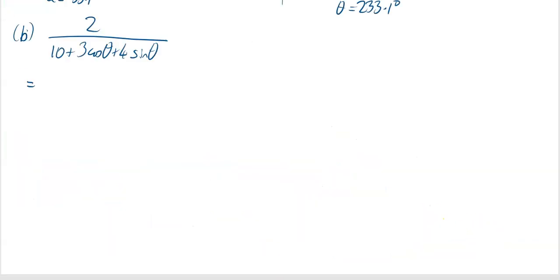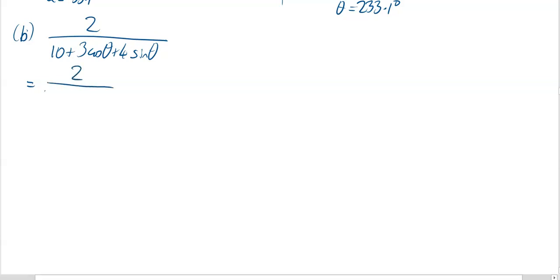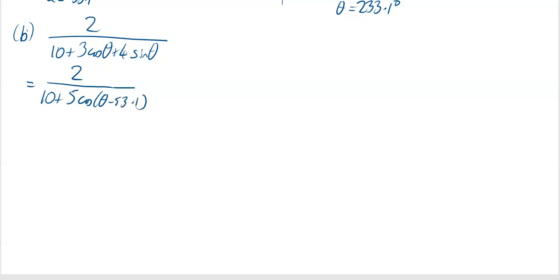The next part of the question asks you to find the maximum and minimum values of this expression and the values of θ when they occur. Notice that 3 cos θ + 4 sin θ was done in part (a), so we rewrite the whole thing as 2 divided by (10 + 5·cos(θ - 53.1°)).